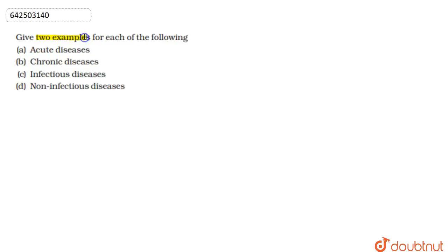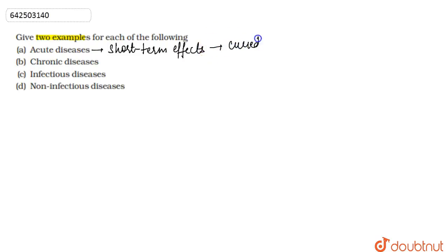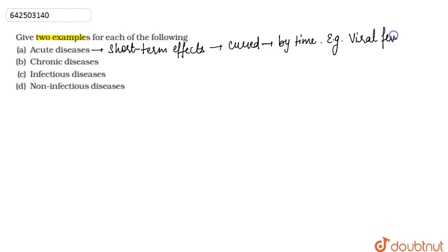In this question, we are asked to give two examples for each of the following. The first one is acute diseases — these are diseases which have short-term effects. They can be cured easily and their effects are not seen for long. Two examples of acute diseases are viral fever and the flu, as these are diseases which can be cured within a week to 10 days.